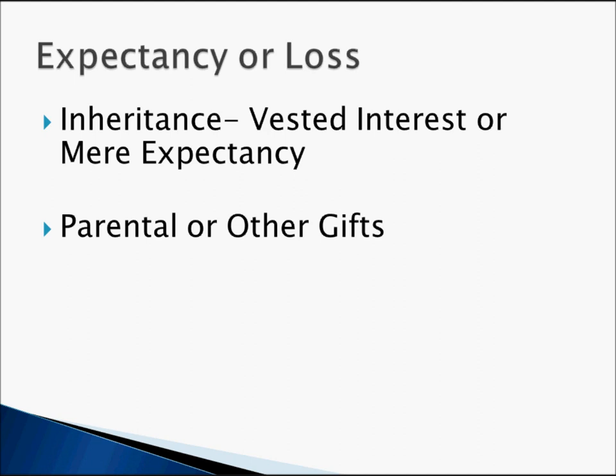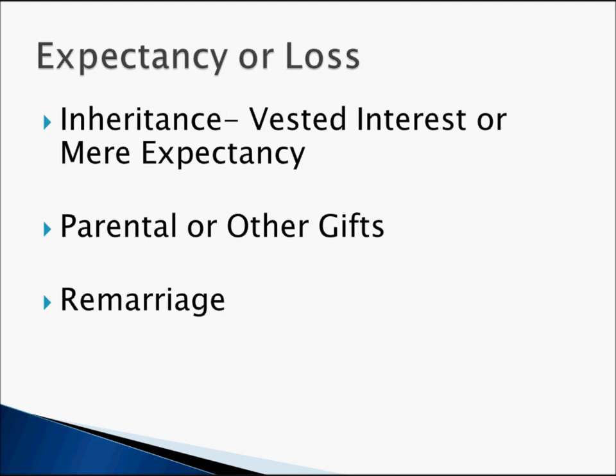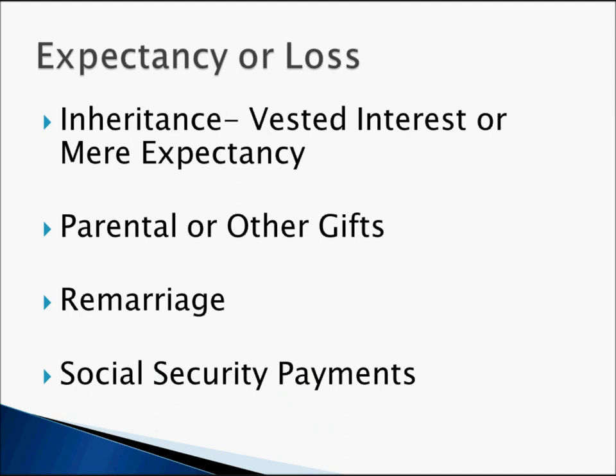Parental gifts or other gifts fall into the same expectancy category — there's no requirement that a gift will be made in the future. Remarriage can also be argued; there's an old case where the judge noted it was unlikely the wife would remarry, which was used as justification for spousal maintenance — it hasn't been overruled and is still available to cite. Social security is characterized as the separate property of the person contributing to it, but if the other spouse isn't going to benefit — perhaps because they weren't married long enough to collect on those benefits — that's something you can argue with respect to what constitutes an overall fair division of property.